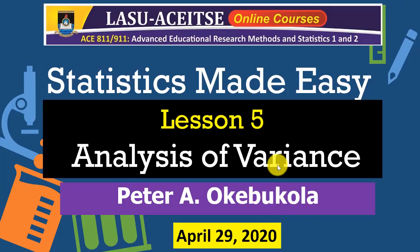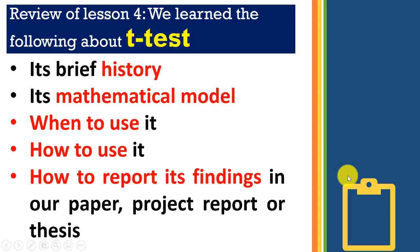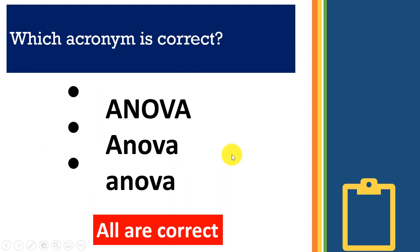Hello everyone, welcome to lesson number five in our Statistics Made Easy series. Today we're going to be looking at Analysis of Variance. Today being April 29, 2020, I'm Peter. In lesson four we learned about t-tests — brief history, mathematical model, and all of that. Today we'll learn about Analysis of Variance: the one-way model, brief history, mathematical model, when and how to use it, and how to report the findings.